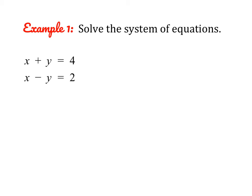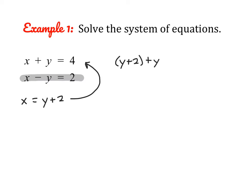Let's do a couple of practice problems together. Here we have x plus y equals 4, and x minus y equals 2. The first thing we need to do is isolate one variable. I'm going to work with the second equation and solve for x. So we say x equals y plus 2, and substitute it into the first equation. It's a good habit to put substitutions in parentheses — it helps when there's a negative involved. So we end up with 2y equals 2.